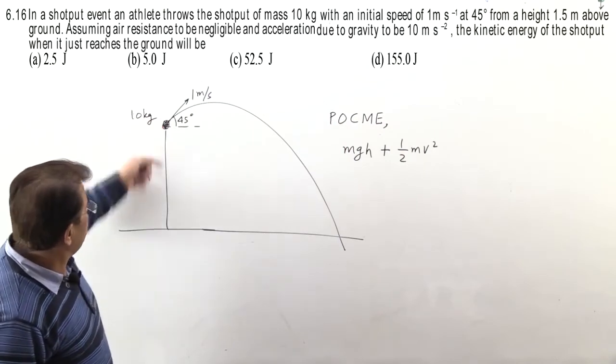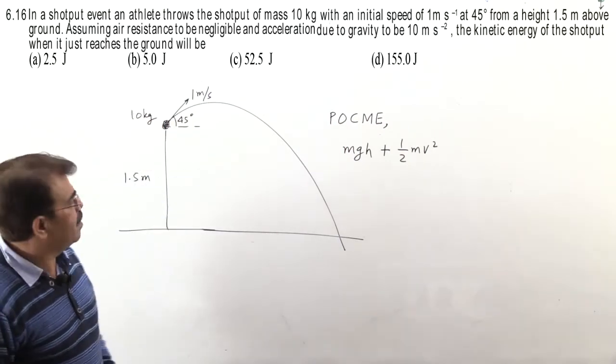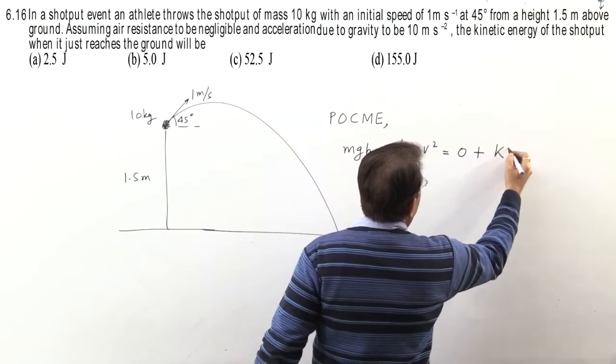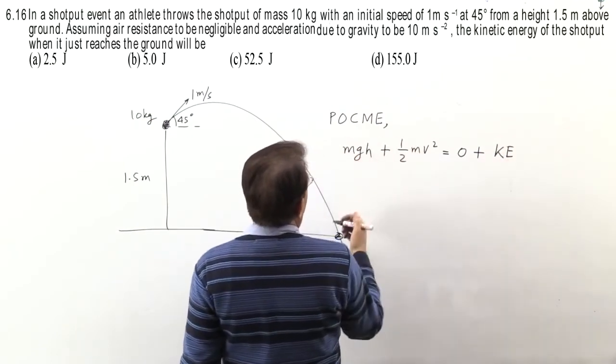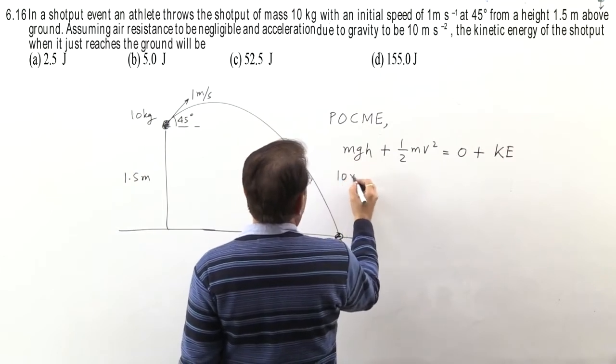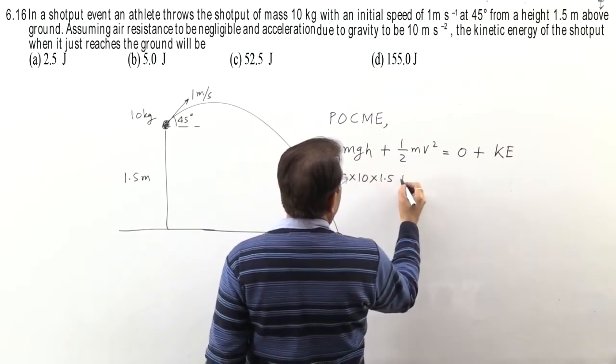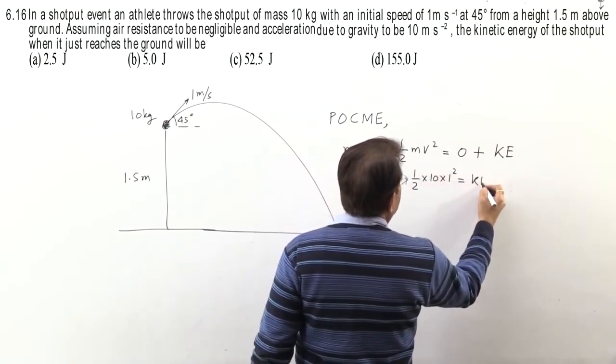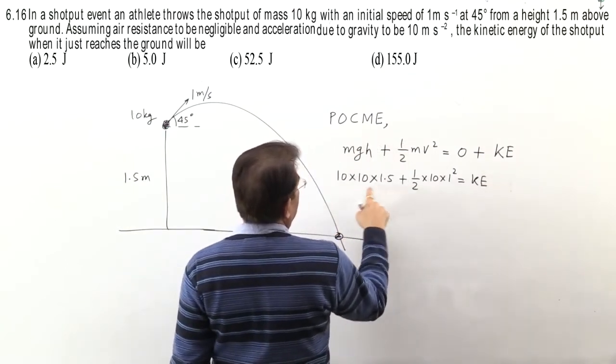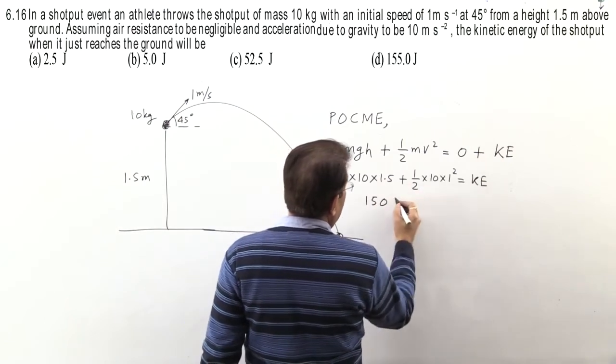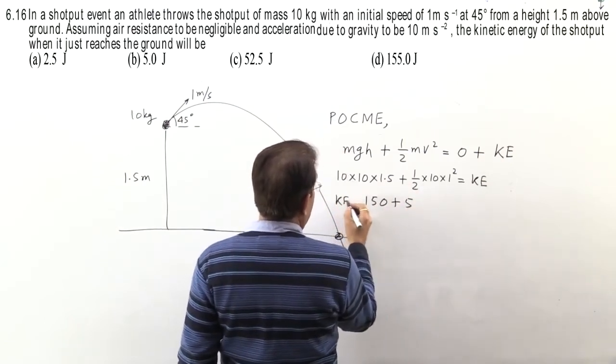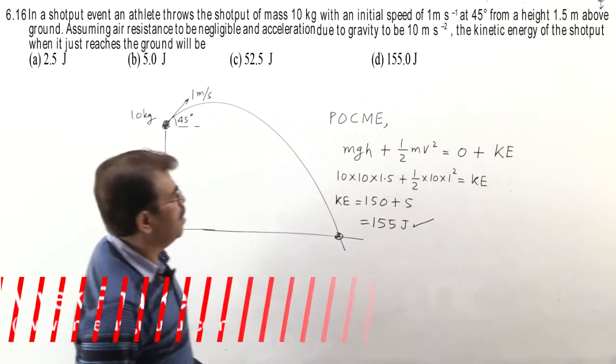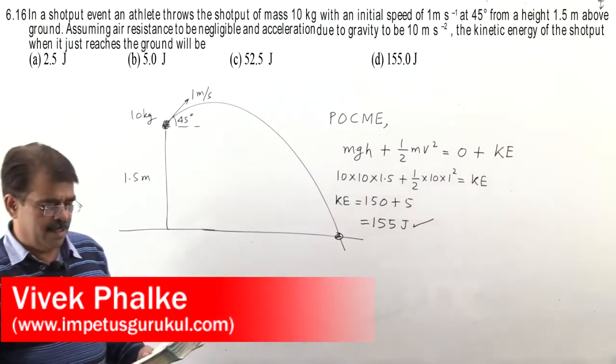We are applying principle of conservation of mechanical energy. Air resistance absent, mechanical energy conserved. Here energy of shotput will be some potential and some kinetic. And when shotput reaches ground, potential is zero and kinetic, which we have to find, we write as KE. Just solve this. Mass of shotput is 10 kg, g is 10, height is 1.5, plus half mv square equals kinetic energy. This way you get answer. This becomes 150, and this becomes 5, so kinetic energy is 155. And answer will come in joule because we're working in SI. So based on principle of conservation of mechanical energy question.